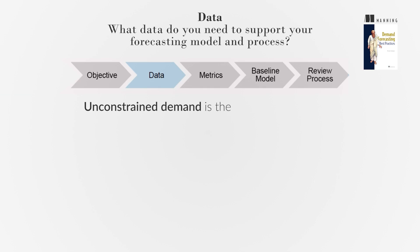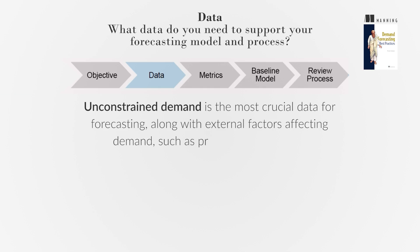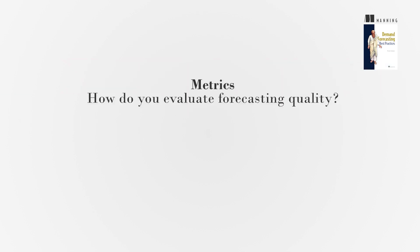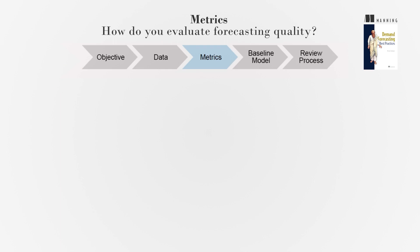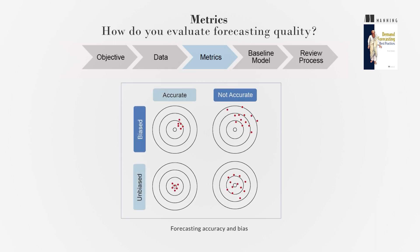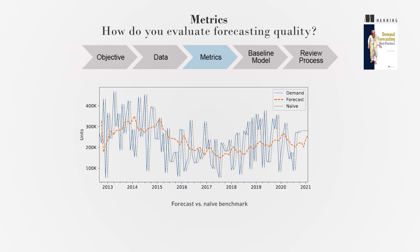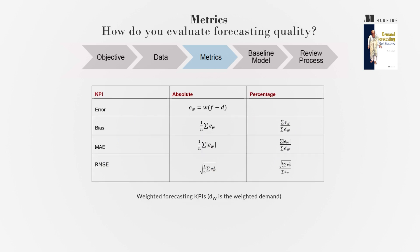Unconstrained demand is the most crucial data for forecasting, along with external factors affecting demand, such as promotions or pricing. To assess forecasting quality, select relevant metrics, with accuracy and bias discussed in Chapters 8 and 9. Chapter 10 addresses benchmarking for model and process accuracy, while Chapter 11 refines metrics for extensive product portfolios.